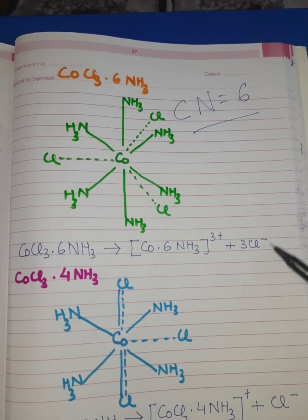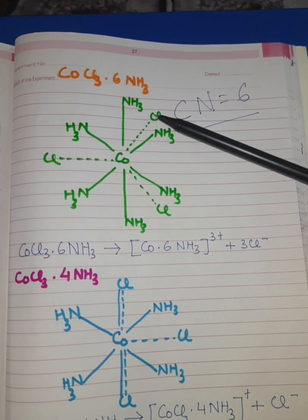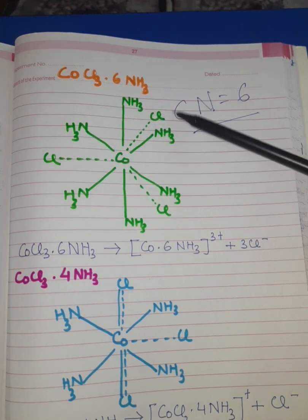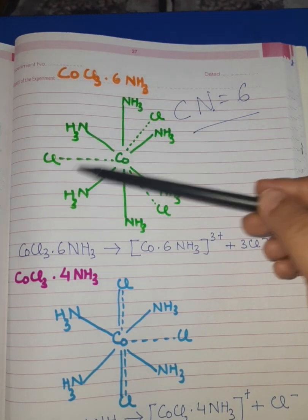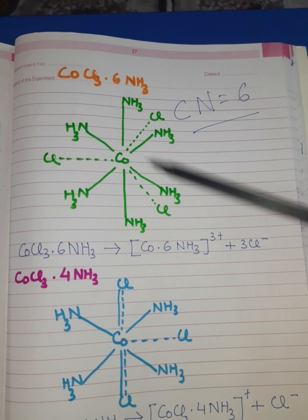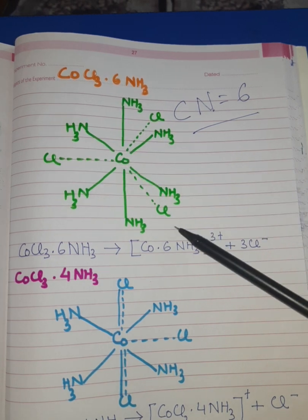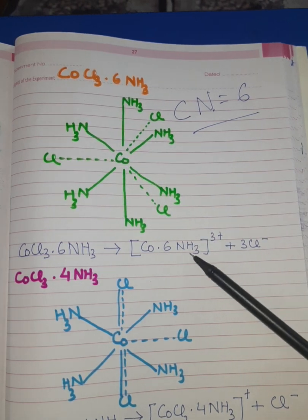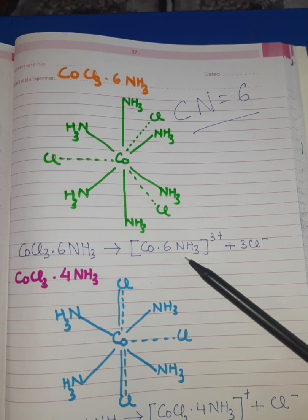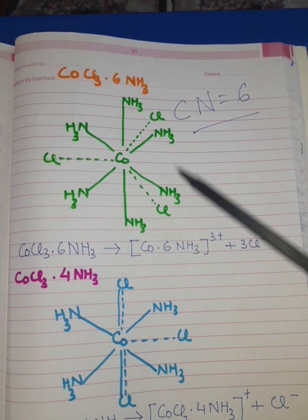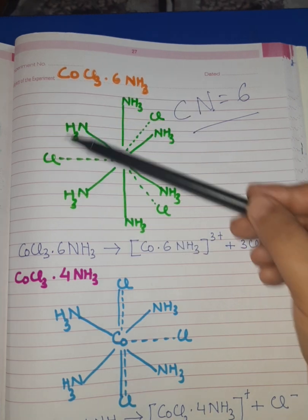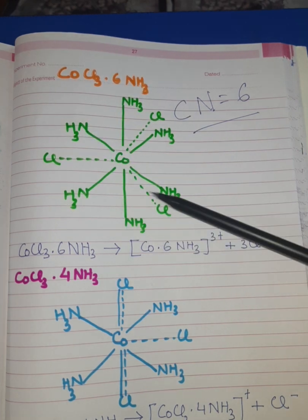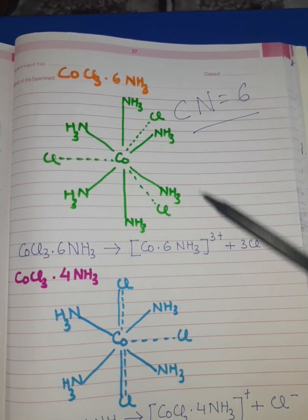The 3 Cl⁻ generated confirms that 3 Cl are bonded via primary valencies shown by dotted lines. The 6 ammonia molecules are unionizable, meaning they are bonded via secondary valency.